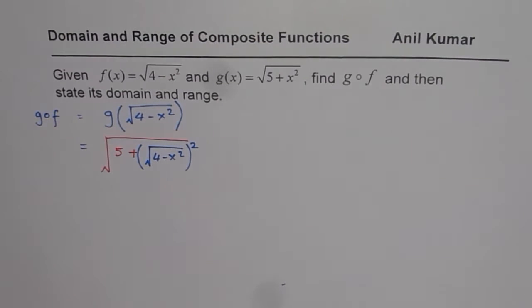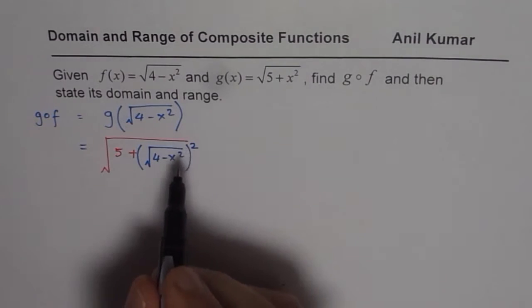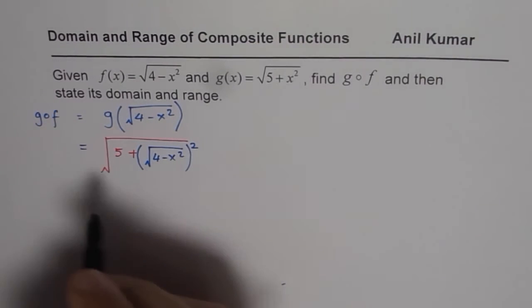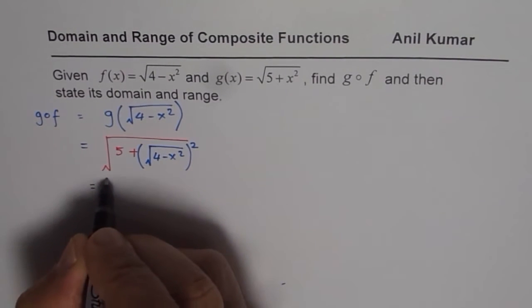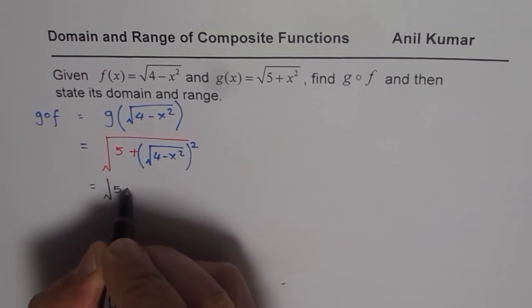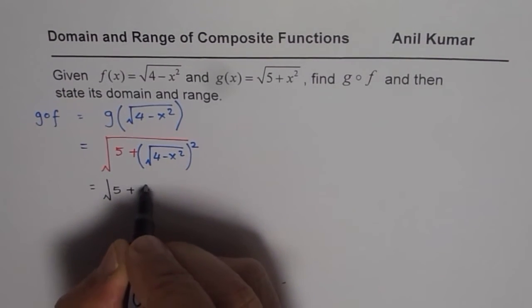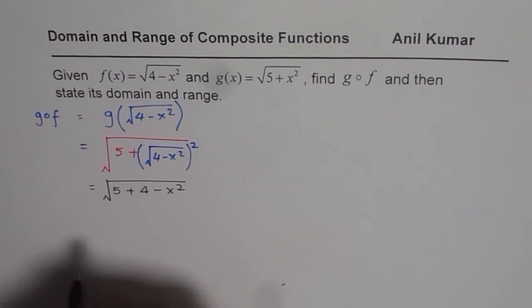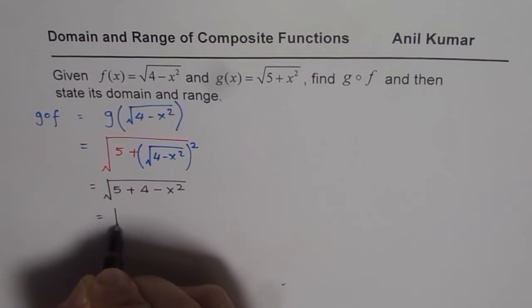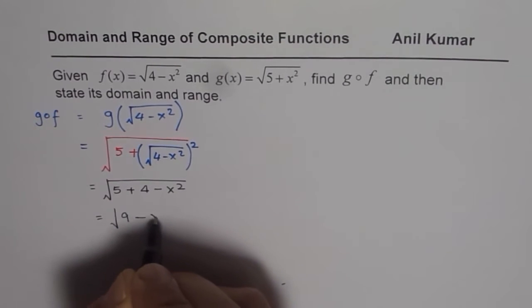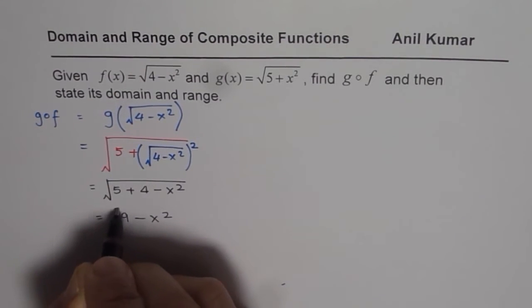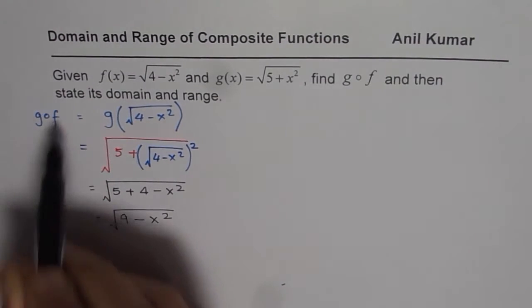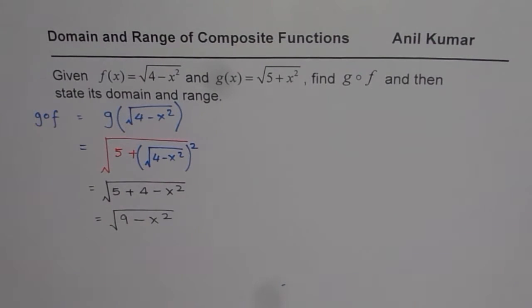When we open that square and square root, we get √(5 + 4 - x²). Since 5 + 4 = 9, we get √(9 - x²). So that becomes the function g of f.